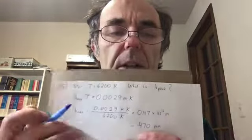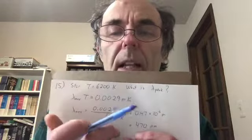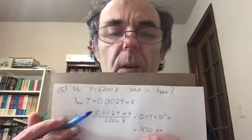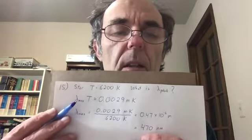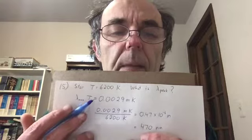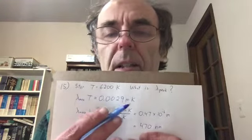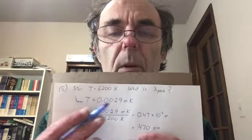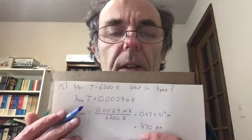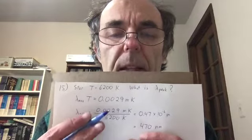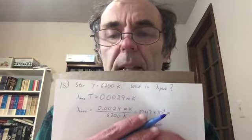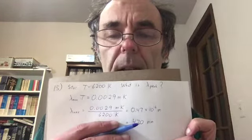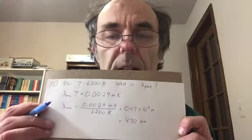Problem fifteen: Wien's displacement law — given a star's temperature, find the peak wavelength of its blackbody spectrum. Wien's law: λ_max · T = constant (find the constant in your textbook chapter). Solving for λ_max by dividing by temperature gives 0.47×10⁻⁶ m = 470 nanometers as the peak wavelength.